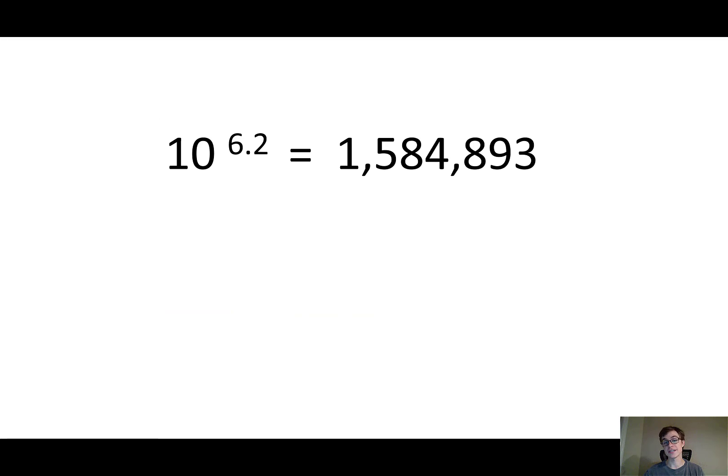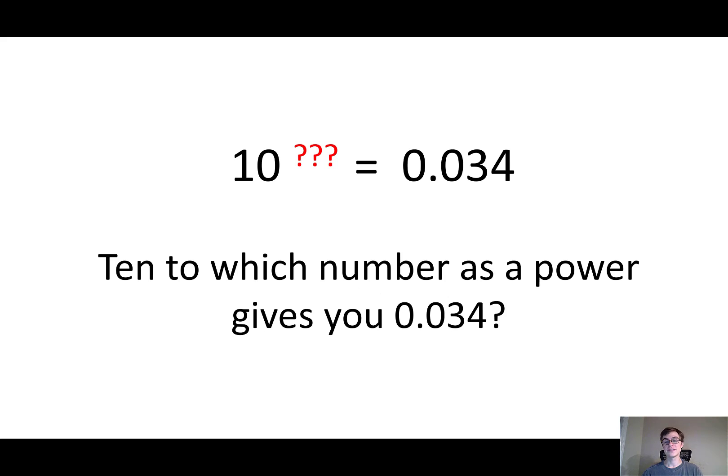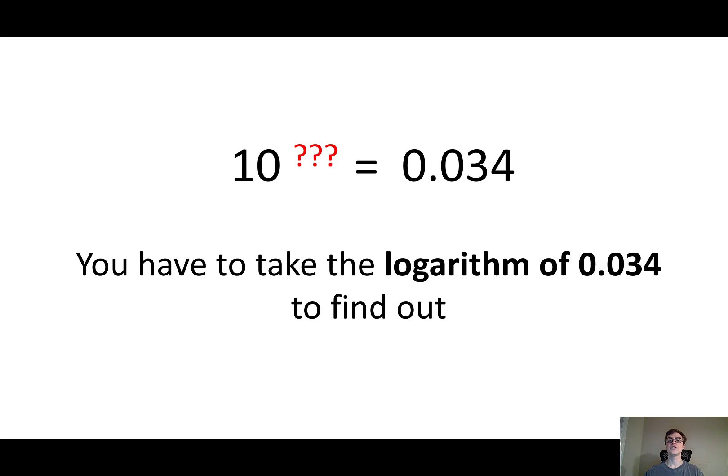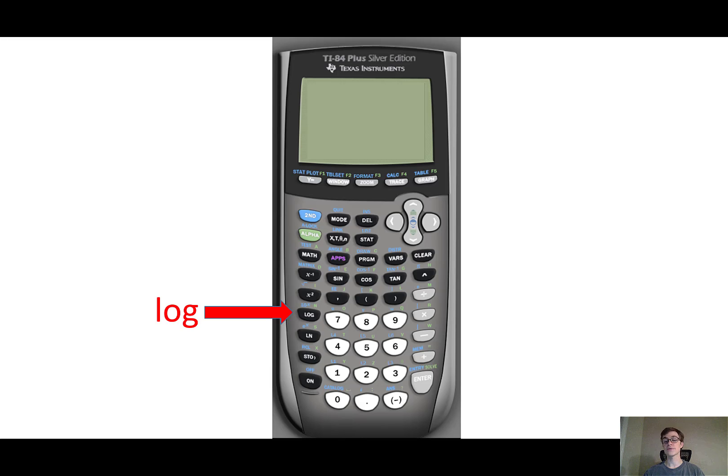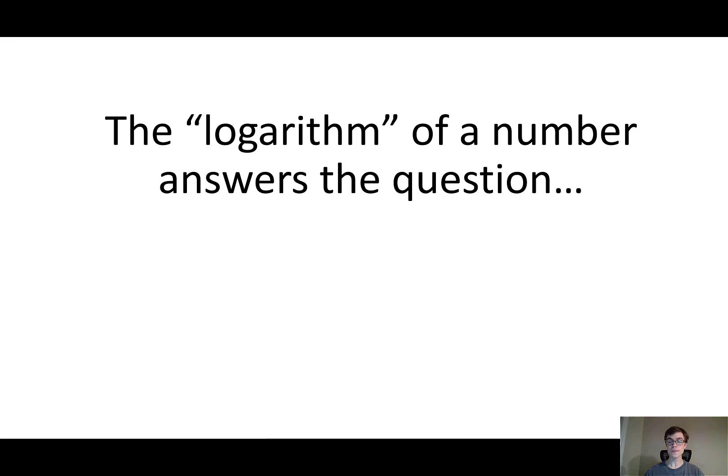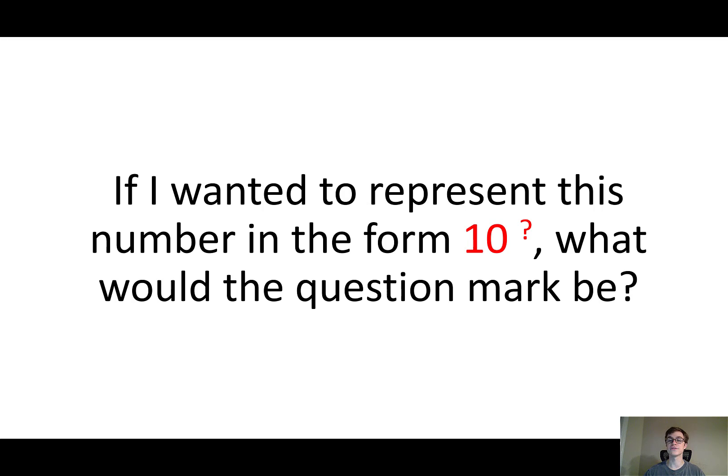Now, you could do this one, even if I didn't give you the answer. But what about going the other way? What if this was your variable? 10 to some power is 0.034. How would you solve this? 10 to which number gives you 0.034 is a difficult problem to solve, because it involves a new mathematical concept. You have to take the logarithm of this number to figure it out. The logarithm button is right here on the calculator, but Google will do it for you also. The logarithm of a number answers the question, if I wanted to represent this number in the form 10 to an exponent, what would that question mark be?